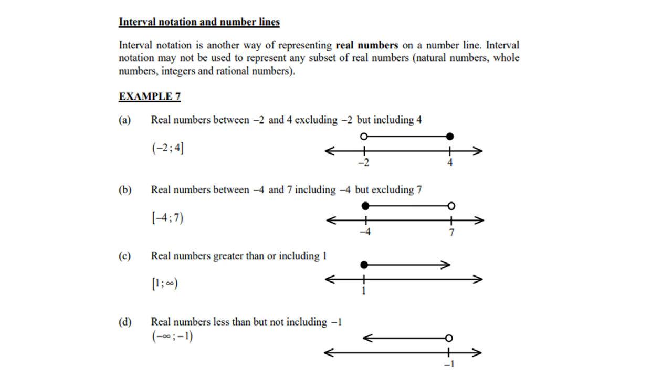See, real numbers greater than or including 1. You include 1, so a square bracket. But greater than means to infinity, so we have an infinity sign with a round bracket, because infinity has no end. If you look at d, real numbers less than but not including -1, you have a round bracket on the side of -1 and negative infinity also has a round bracket.